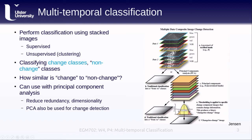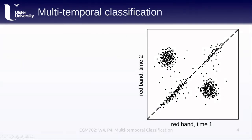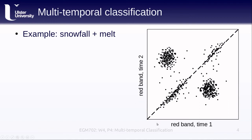We can also use this for change detection. To help think about multi-temporal classification, let's run through a short simple example: snowfall and melt between two different images, looking specifically at the red band — the visible red wavelengths. We know that fresh snow has a very high reflectance in the visible bands.